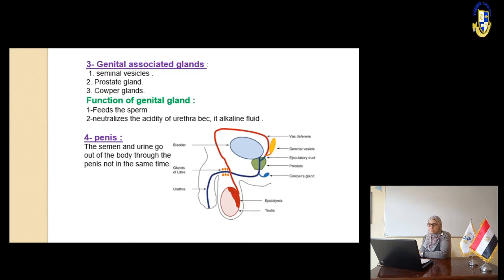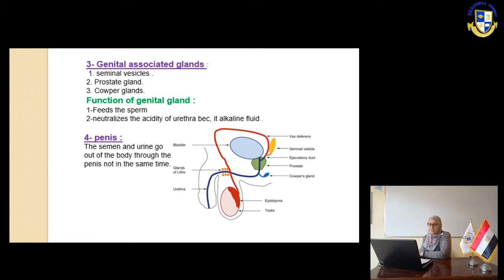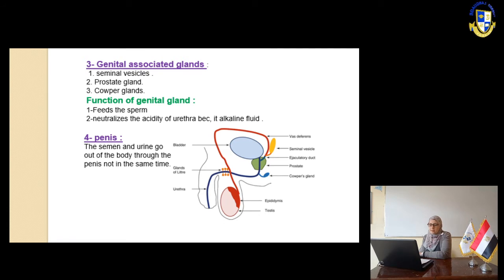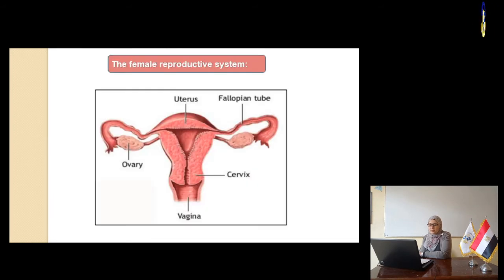Slide number 6. The genital glands — there are three glands: the seminal vesicle, the prostate gland, and Cowper's gland. The functions of the genital glands are: number one, they feed the sperm; number two, they neutralize the acidity of the urethra by producing alkaline fluid. Both semen and urine exit the body through the penis, but not at the same time.